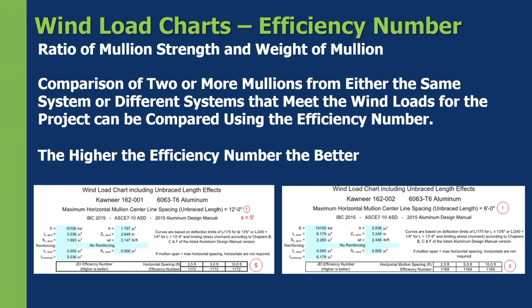So if both mullions work for the wind load pressures on your project — say 20 psf — which should you choose? The one with the higher efficiency number, because you're getting more bang for your buck with less material, which should mean a cost savings for your project. You can use these numbers to compare two or more mullions within the same system, or compare across manufacturers like Connier, Oldcastle, FCO, Tubelite, or YKK, to find which gives the higher number and base your system selection on that.